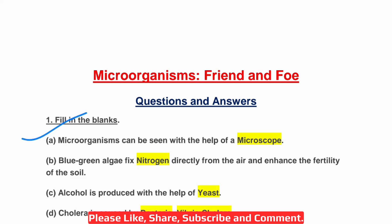Fill in the blanks. A: Microorganisms can be seen with the help of a microscope. B: Blue-green algae fix nitrogen directly from the air and enhance the fertility of the soil. The answer is nitrogen.